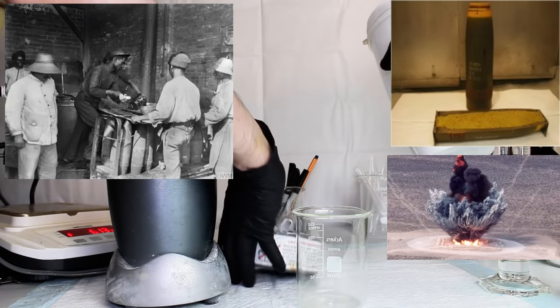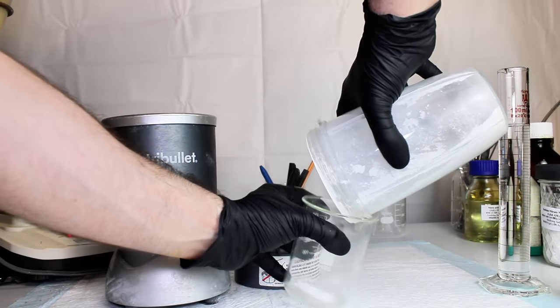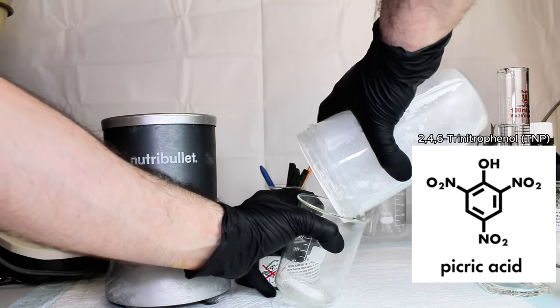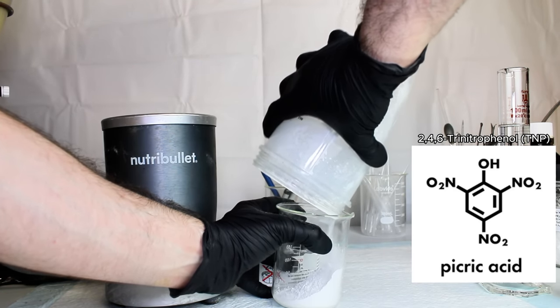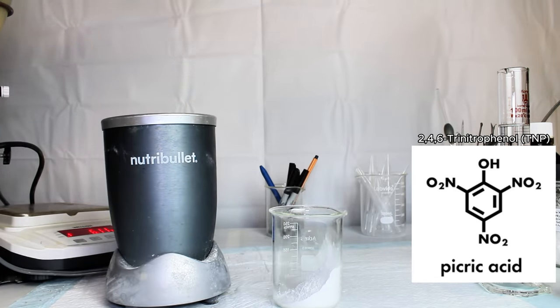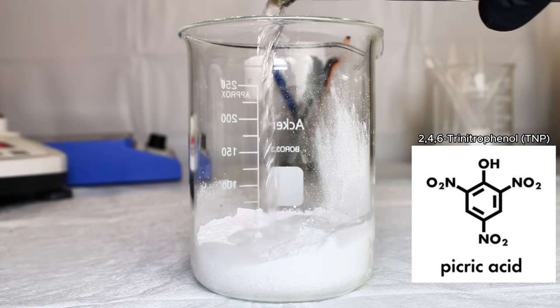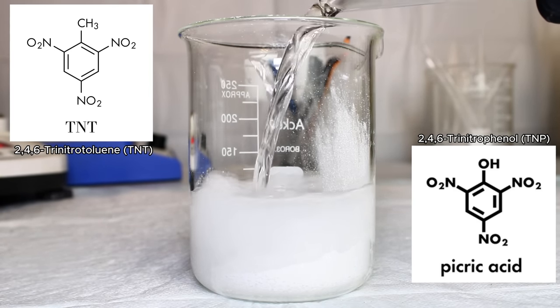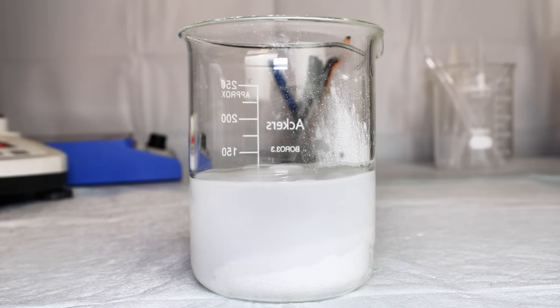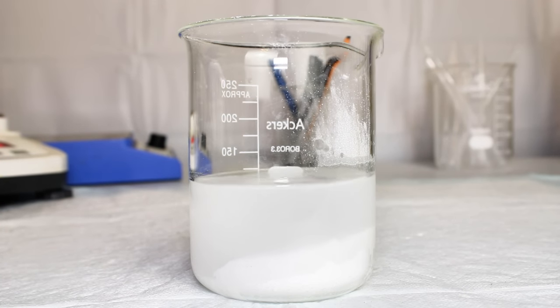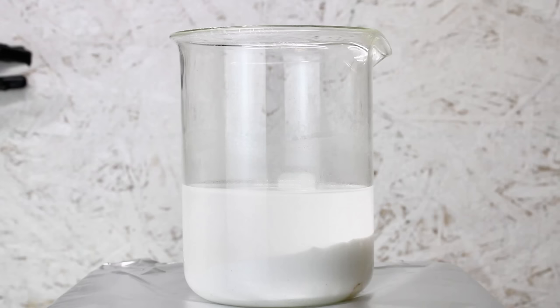The IUPAC name for picric acid is 2,4,6-trinitrophenol, or TNP, and its ammonium salt is a far more powerful but less stable predecessor to the more common explosive TNT, which has a very similar chemical structure. Ammonium picricate, or dunite as it was called, was used extensively in the early 1900s for artillery shells.